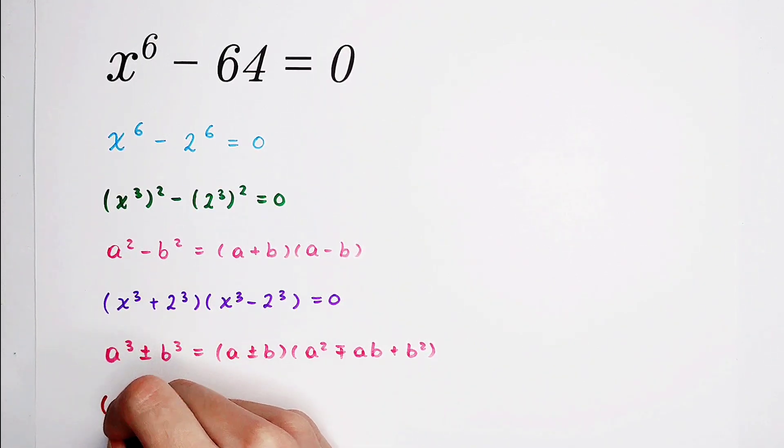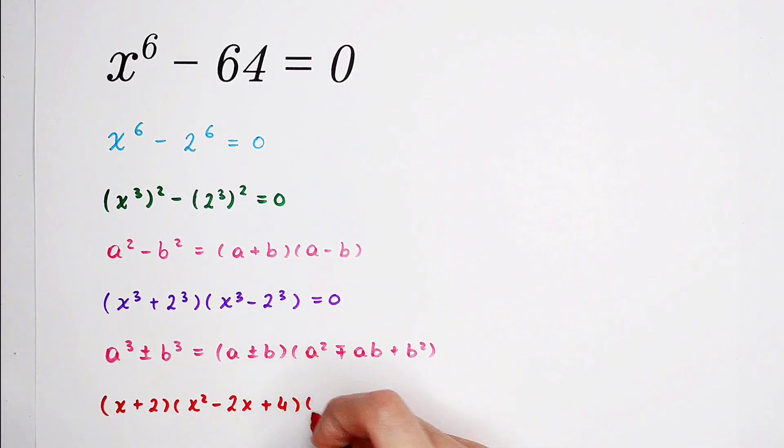So it is x plus 2 times x squared minus 2x plus 4, and then times x minus 2 times x squared plus 2x plus 4 equals 0. So the left hand side is a product of 4 terms, and the right hand side is 0. So very good.